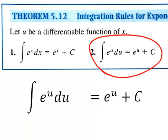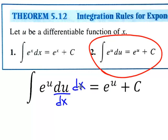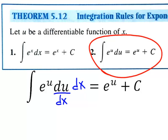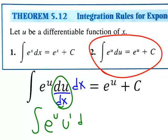Let's move this over and put du over dx times dx, which is a perfectly legal move. Notice that du over dx may also be written as u-prime. So that yields this equation: the indefinite integral of e to the u, times u-prime, dx equals e to the u plus c.